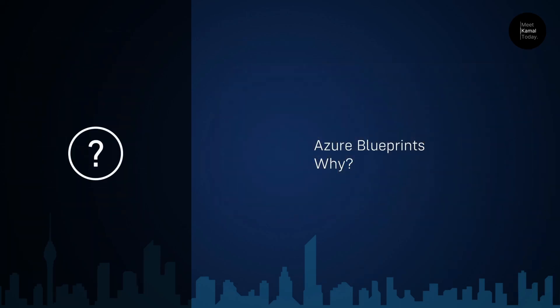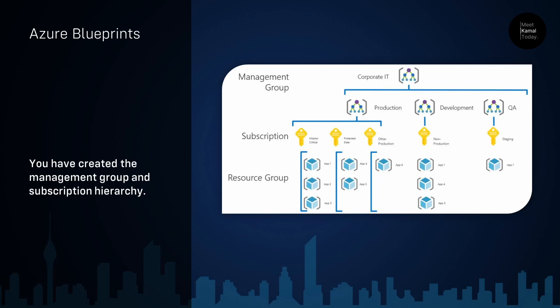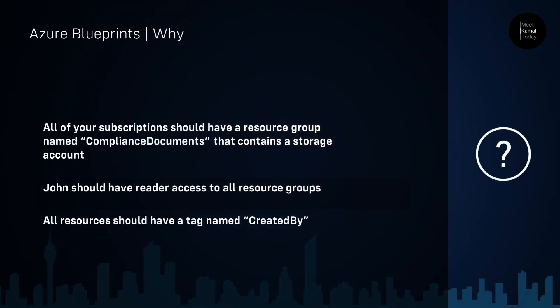Now you have a high-level understanding about management groups. Let's understand what Azure Blueprints are. Let's say you have created a management group and subscription hierarchy. Since it is a big and complex hierarchy, you want to have some order or similarity for easier management. For example, all of your subscriptions should have a resource group named 'compliance documents', and that resource group should contain an Azure storage account for keeping compliance documents. John, who is an Active Directory user, should have reader access to all resource groups in each subscription. And finally, you want to have a tag named 'createdby' for all the resources in all subscriptions.